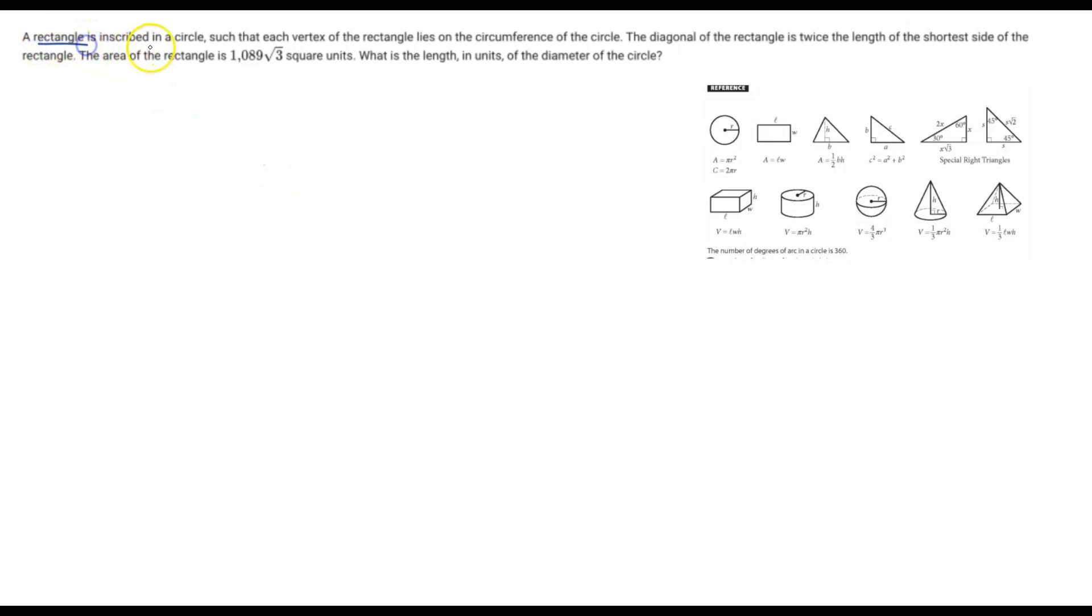So it says a rectangle is inscribed in a circle such that the vertex of the rectangle lies on the circumference of the circle. All right, first let's just draw this out. The first thing you have to do with these geometry problems is interpret them. There's all this weird wording there, but as long as you just take it step by step, word by word, you'll be fine. So the rectangle is inscribed inside of a circle. Let me just draw a circle and then draw a rectangle.